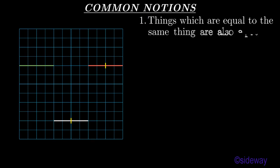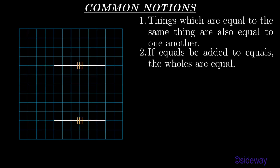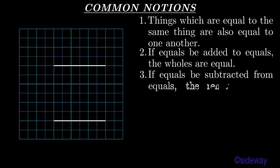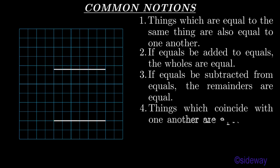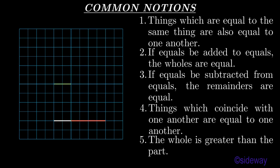Euclid's Elements Book 1. Common Notions. Things which are equal to the same thing are also equal to one another. If equals be added to equals, the wholes are equal. If equals be subtracted from equals, the remainders are equal. Things which coincide with one another are equal to one another. The whole is greater than the part.